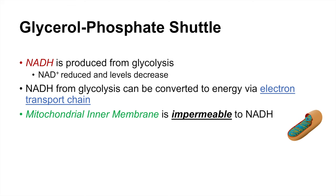The reason the mitochondrial inner membrane is impermeable is because it is composed of 80% protein, which makes it highly selective. This is the reason we need the shuttle system. The glycerophosphate shuttle allows us to sneak in the protons and electrons from the NADH past the mitochondrial inner membrane so that we can get the energy out of it through the electron transport chain.